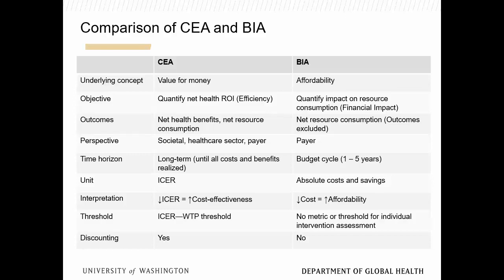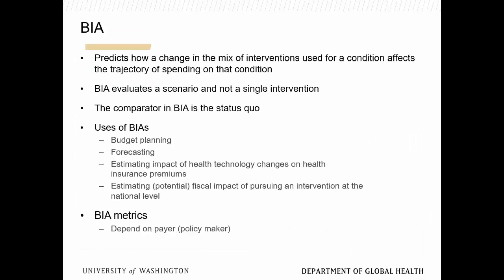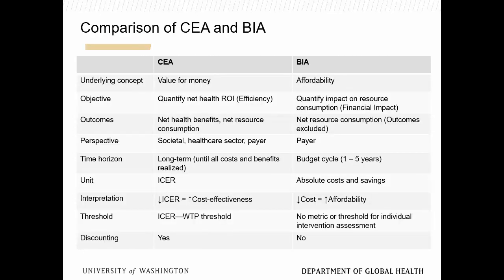The key differences between cost-effectiveness analysis (CEA) and budget impact analysis (BIA): CEA is about value; BIA is about affordability. There are no outcomes in BIA. The normative perspective in cost-effectiveness is a societal perspective including costs and benefits across all sectors, but in BIA you're just looking at a single payer. CEA uses ICERs; BIA uses absolute cost savings. CEA has a willingness-to-pay threshold; BIA has no such metric. And you don't discount in budget impacts.